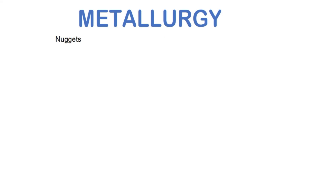Nuggets: a few metals in the earth's crust are found in their native form — namely copper, silver, gold, and platinum. These metals are called noble metals. When these metals are found in large amounts or in lumps, those lumps are called nuggets. Usually these metals are associated with alluvial impurities such as clay and sand.